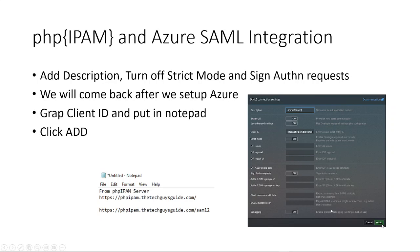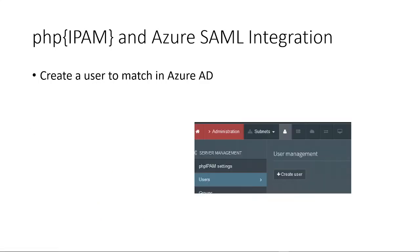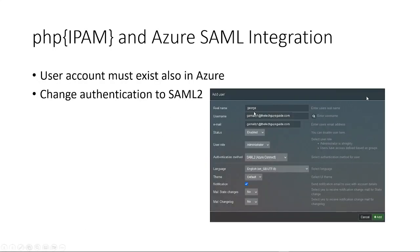Next, we want to click the Add button, and that will save this. Now we need to create a user to match our user in AD. I created a character called George — it's GeorgeSmally1. Just fill out the username and the email. Your username should match exactly what it is in Azure, which is why it's in this long-form format. I set the role as admin, and then under the authentication method I selected the SAML 2 Azure Connect we just created.